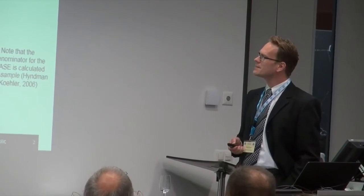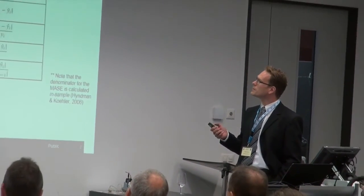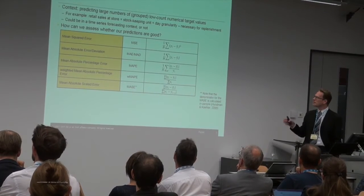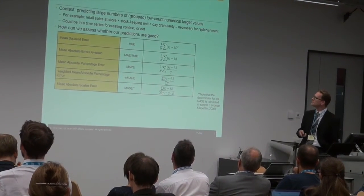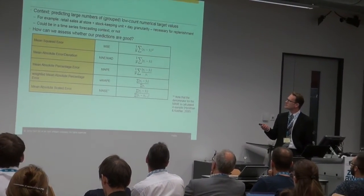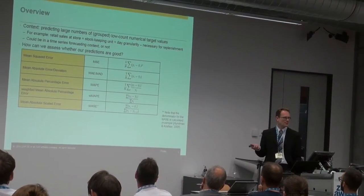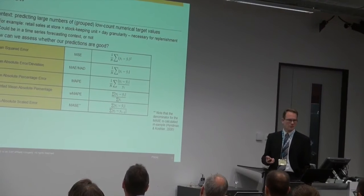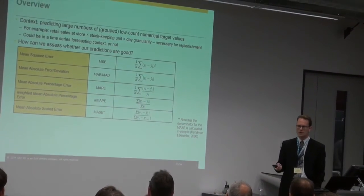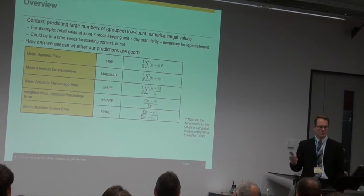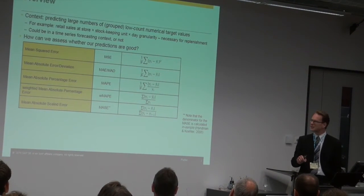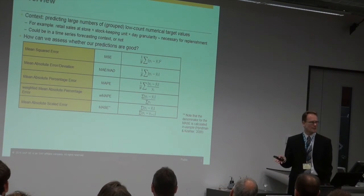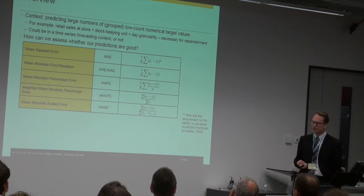I hope you'll stay until the end. My context today is predicting large numbers of low count numerical target values — prediction of count values, large numbers of those, possibly grouped. This is motivated from where I come from: retail sales at a store, times stock keeping unit, times date granularity, very low granularity. You need that for replenishment — you need to know how much you're going to sell tomorrow because there's a promotion coming up, and you need to know that in the store today so you can order.